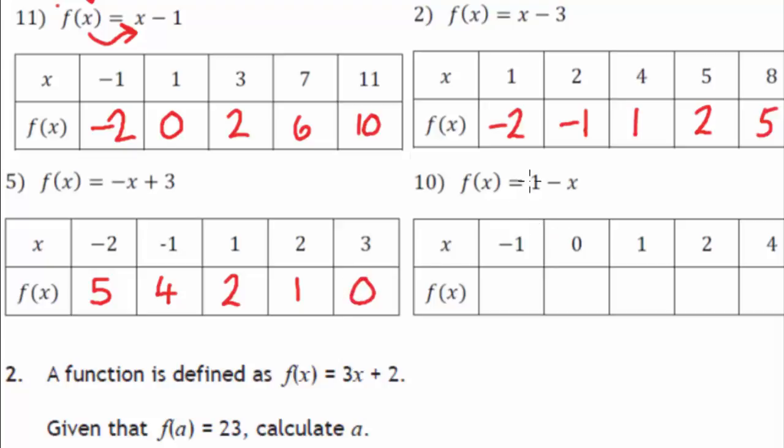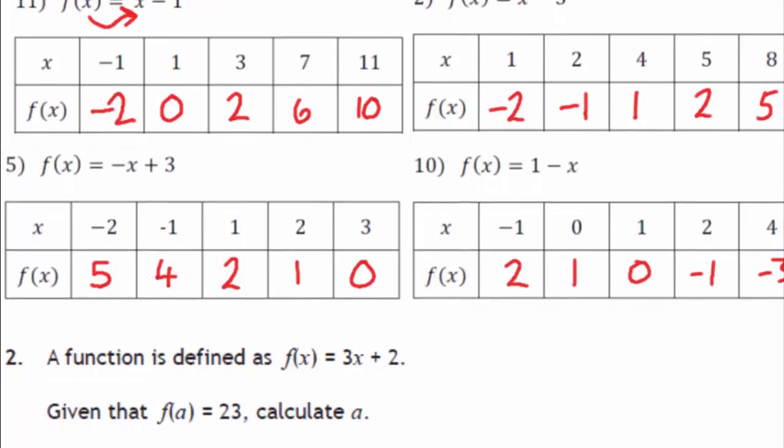Then we've got 1 minus x. x is minus 1, so 1 minus minus 1, so that's 1 plus 1, that's 2. 1 minus 0 is still 1. 1 minus 1 is 0. 1 minus 2 is minus 1. And 1 minus 4 is minus 3. Okay, so that answers for the first 4.